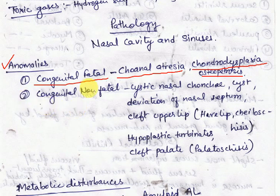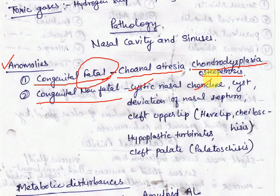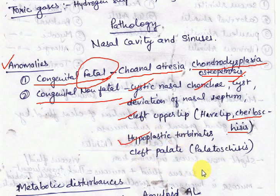That is, they are fatal. Non-fatal congenital anomalies include cystic nasal conchae, nasal and sinus cysts, deviation of the nasal septum, cleft upper lip, cheiloschisis, hypoplastic turbinates, and cleft palate (palatoschisis).